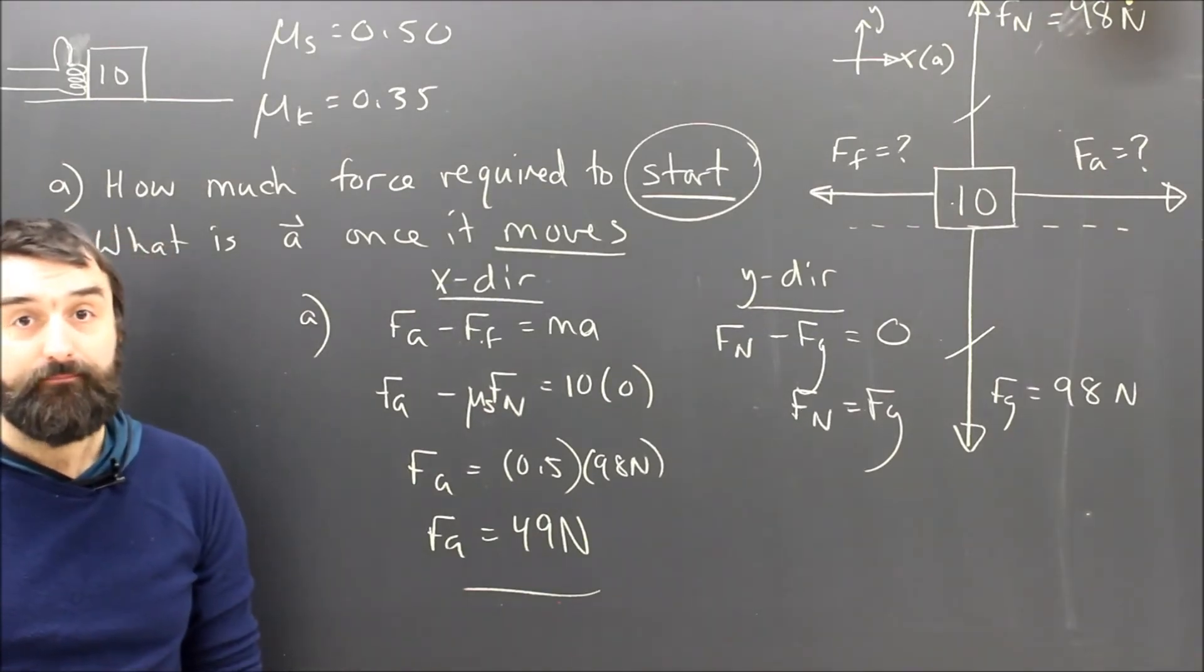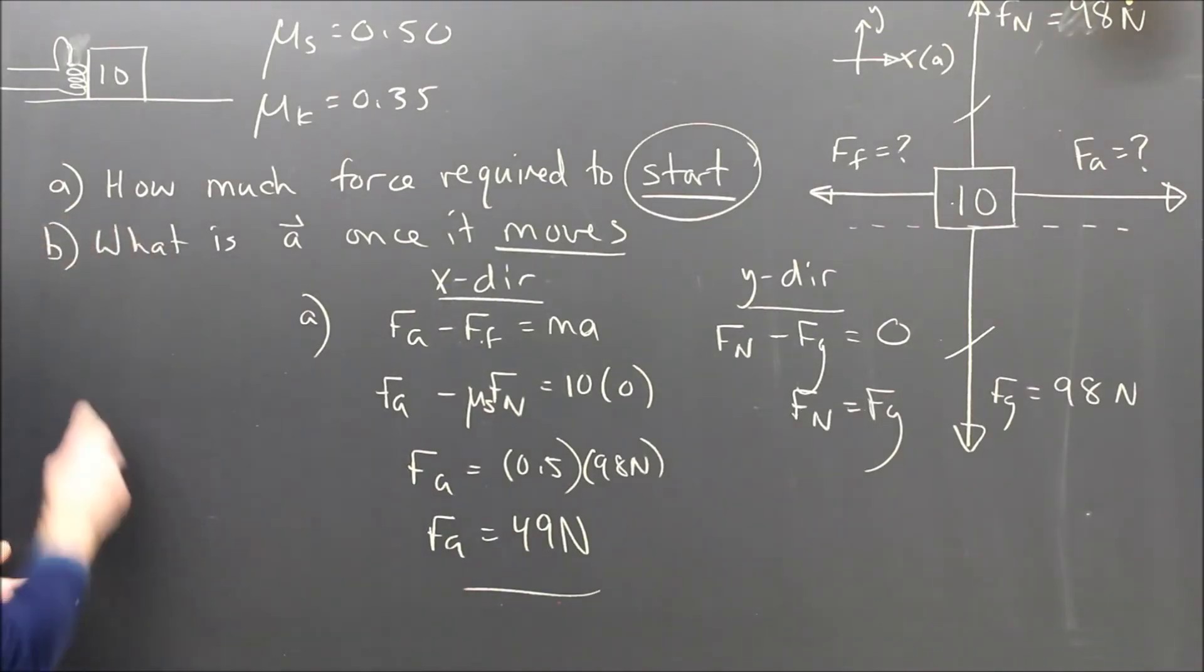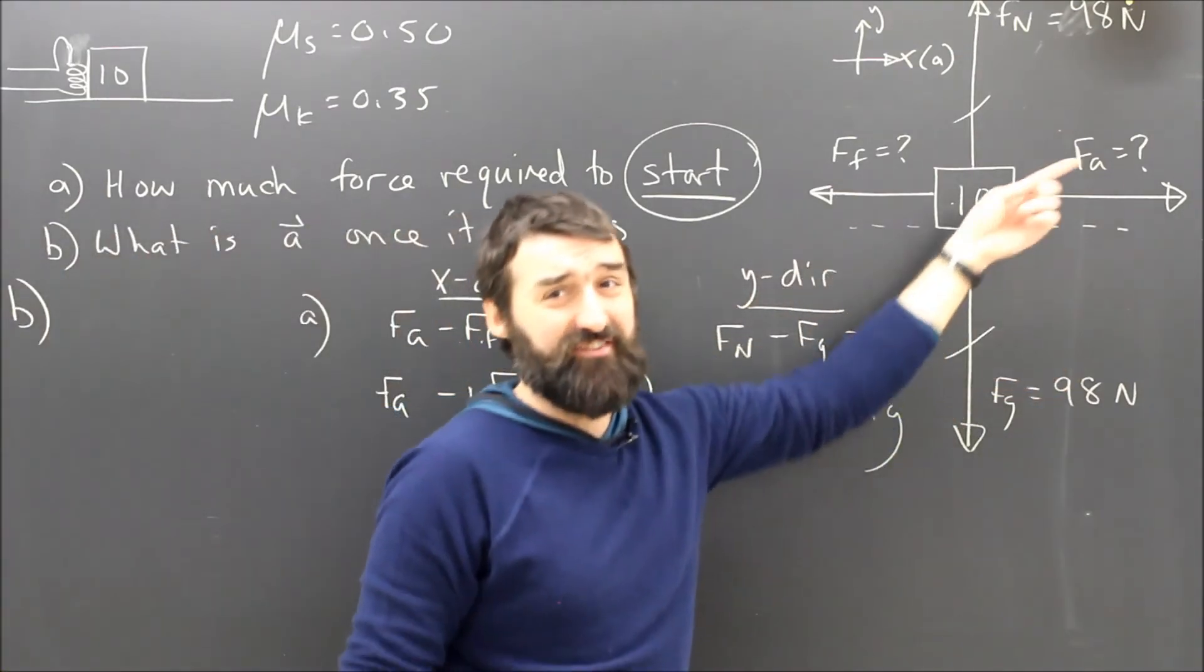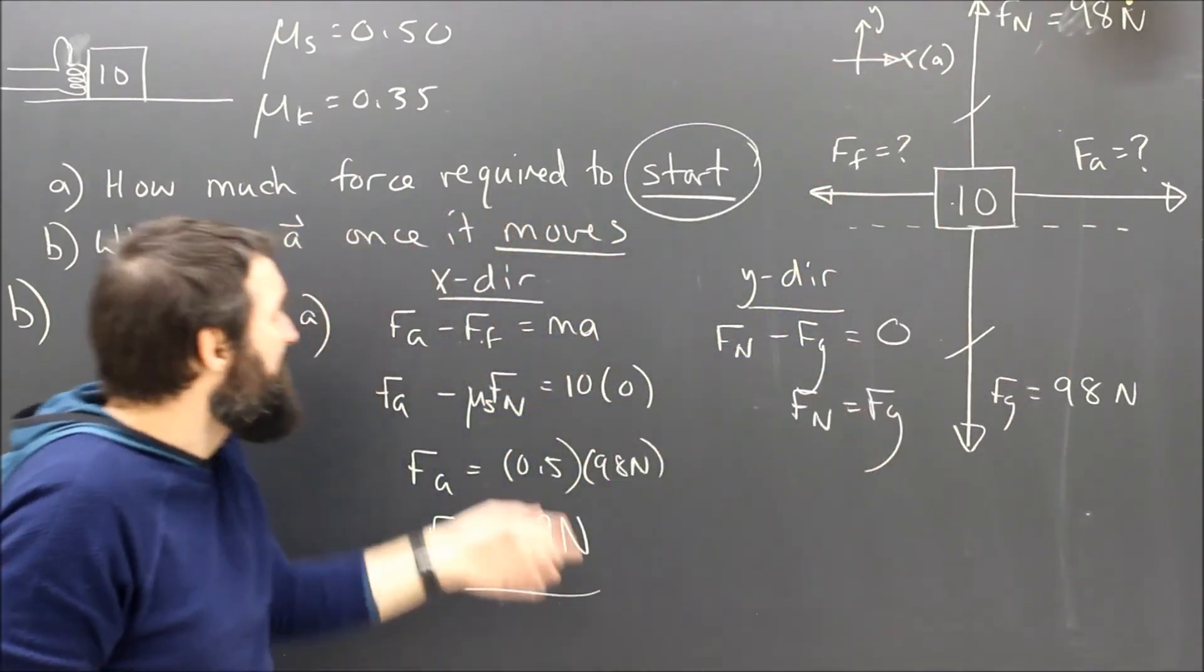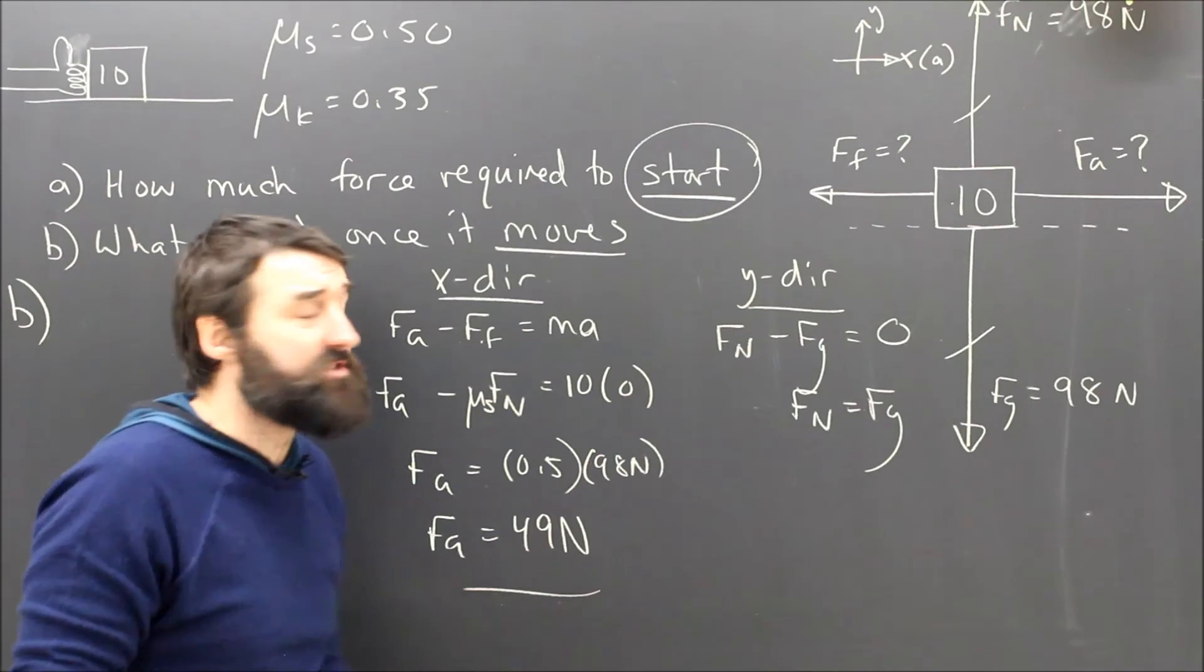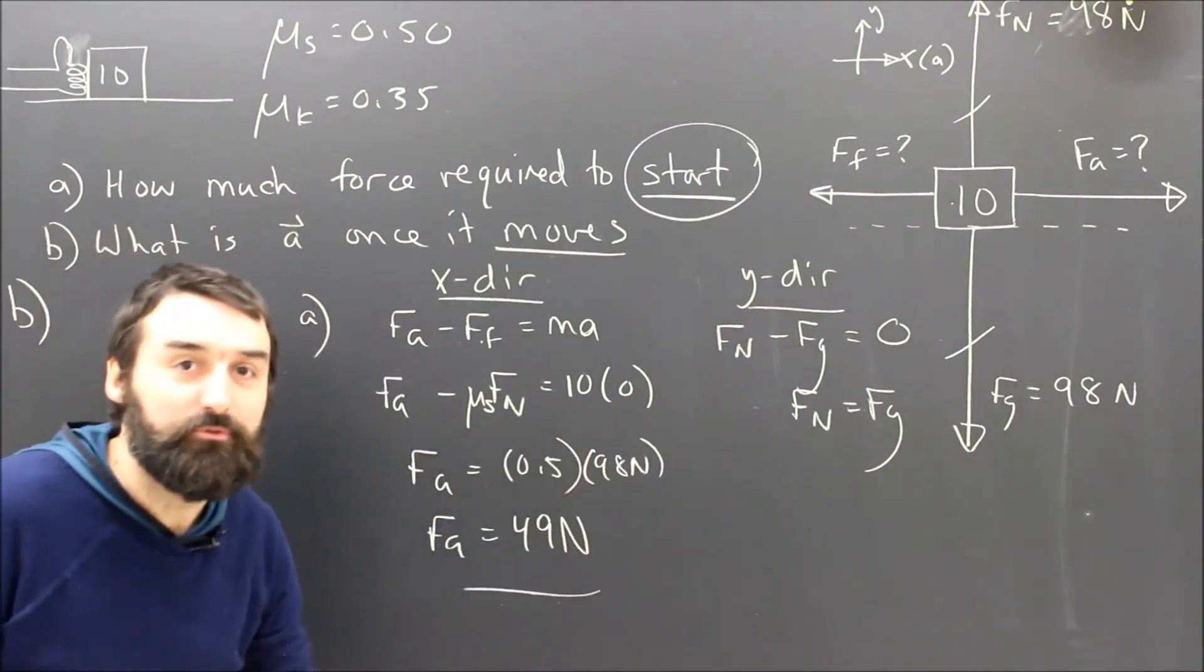So what about part B? Part B, I'm going to do over here, because it's super simple. I've already drawn the free body diagram, nothing's changed. I've got Fa, I've got Ff, I've got gravity, normal force. Nothing really has changed. My x equation is fine, my y equation is fine. The only thing that's different is now it's moving.